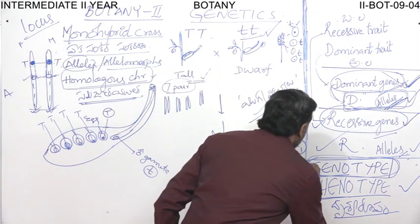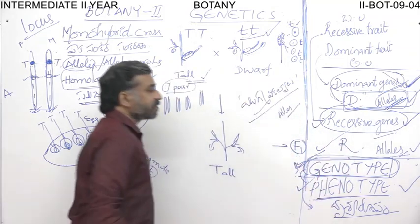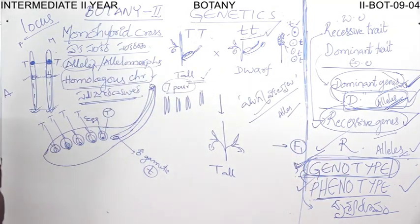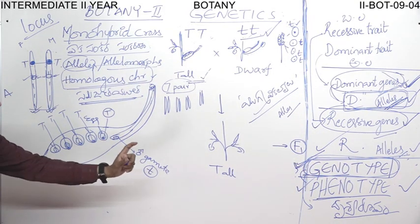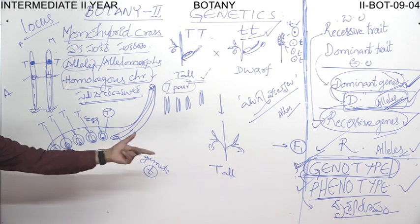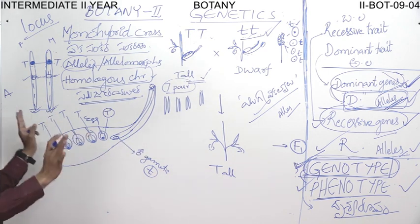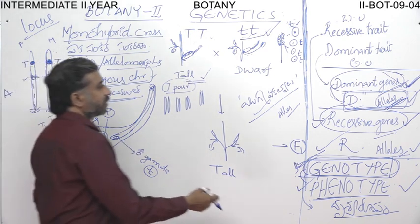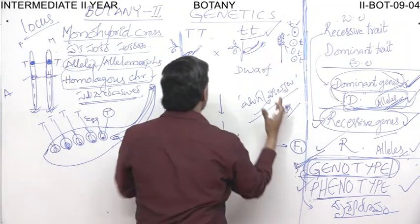So we have learned about these two terms: genotype means the genetic composition, and phenotype means the external appearance. Now we have learned all these terms.